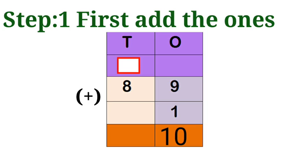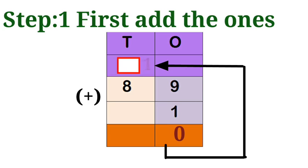So use the regrouping method. We write zero in the ones column. Carry over one to the tens column.